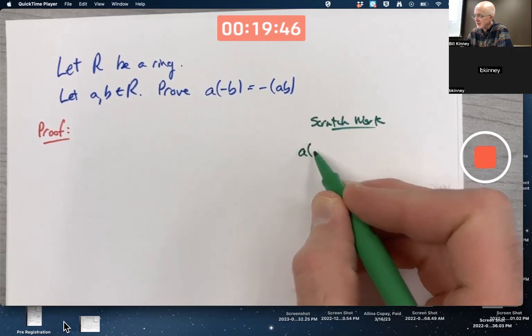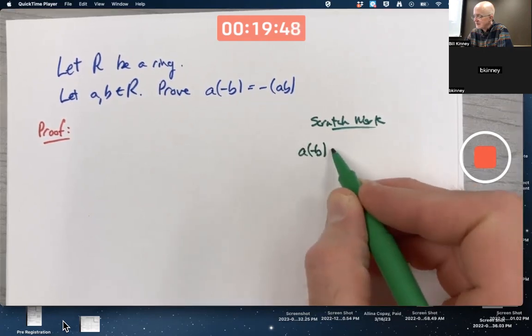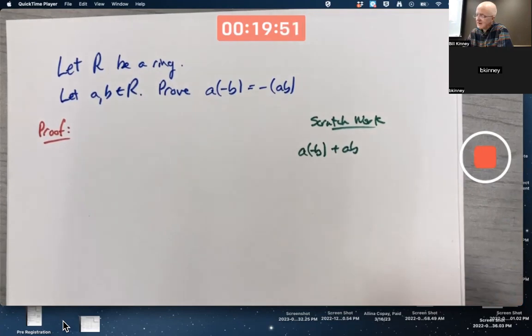So in your scratch work, that would be the first thing I attempt to do is to see if I can show that when I add those, I get zero. And again, you say to yourself, well, I only allow myself to use the definition of a ring. Essentially, that's my axioms. Those are the things that I can assume are true.